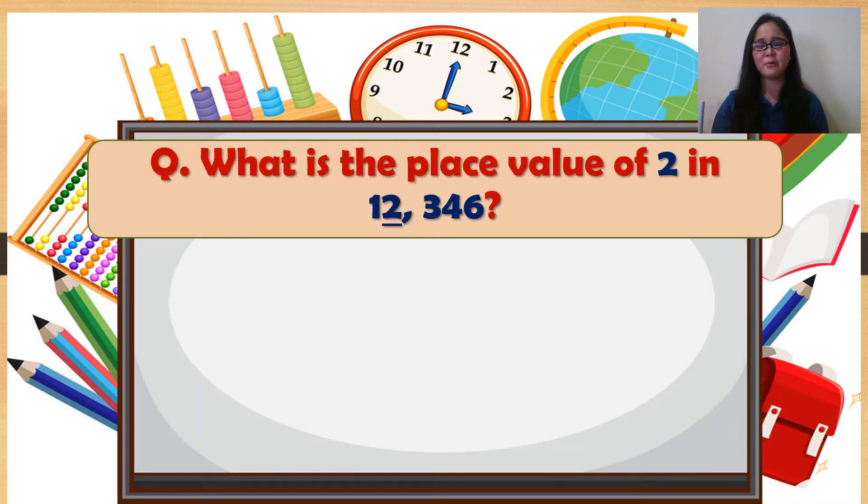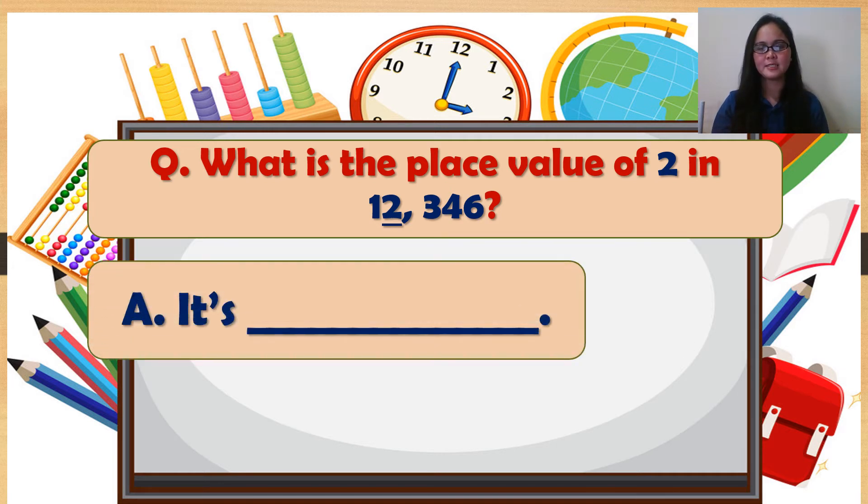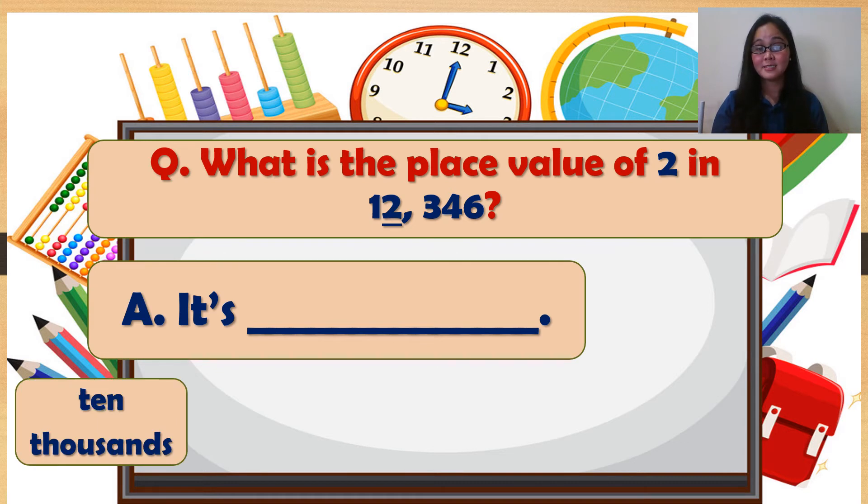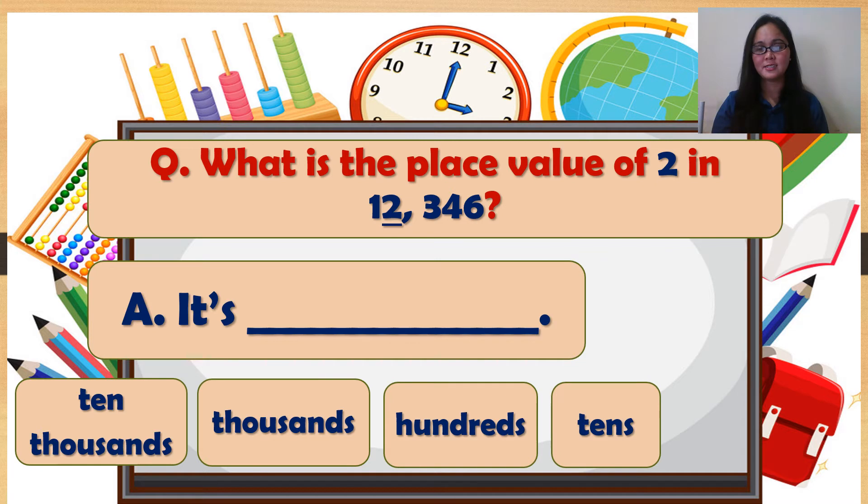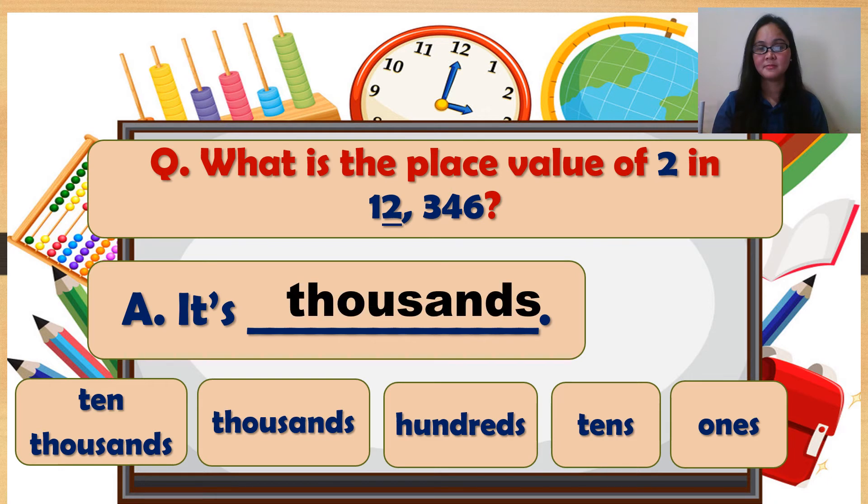Another example. What is the place value of 2 in 12,346? It's blank. Ten thousands, thousands, hundreds, tens, ones? It's thousands. Good.